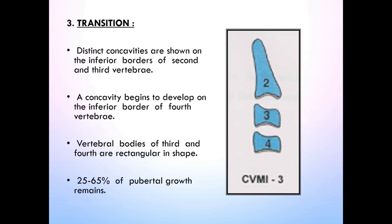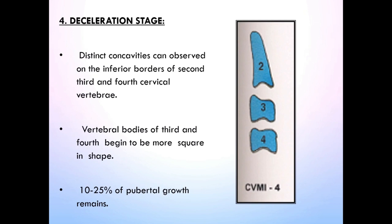Stage 3 is Transition. Concavities at the lower borders of both C2 and C3 are present. A lower concavity begins to develop on C4. Vertebral bodies of C3 and C4 are rectangular in shape. 25–65% of growth remains. The peak in mandibular growth will occur during the year after this stage. The amount of elongation of the mandible is greater than the two years before and the years after puberty.